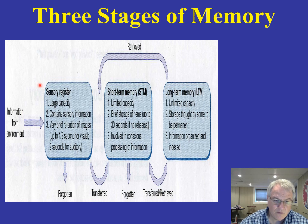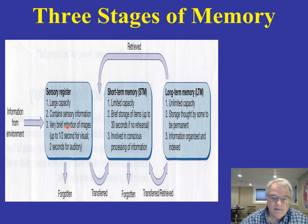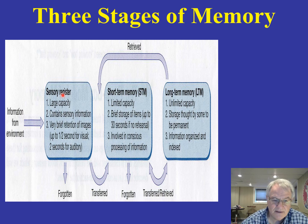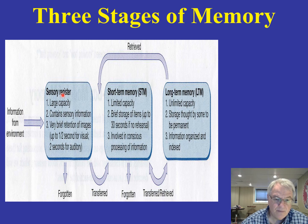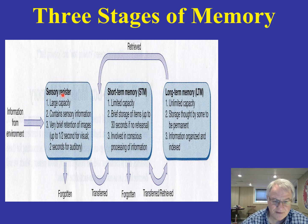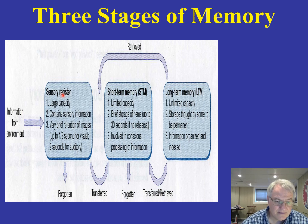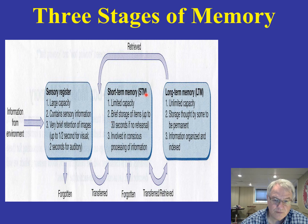The first is what is called the sensory register. The sensory register maintains a literal image of everything that's going on in our sensory world. Its capacity is extremely large and can contain a lot of information at once. But it's only going to stay there for a very brief period of time — for a visual stimulus, maybe about half a second; for an auditory stimulus, maybe about two seconds. A lot of that information is going to be forgotten, but a fair amount will be transferred into short-term memory.